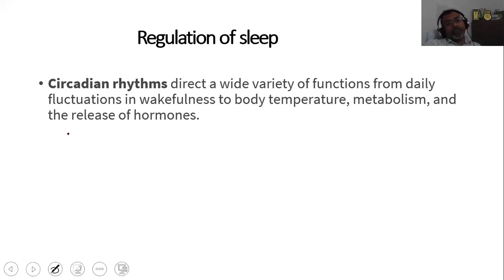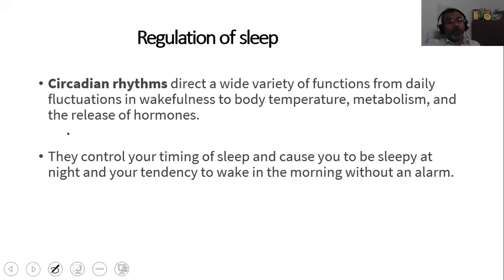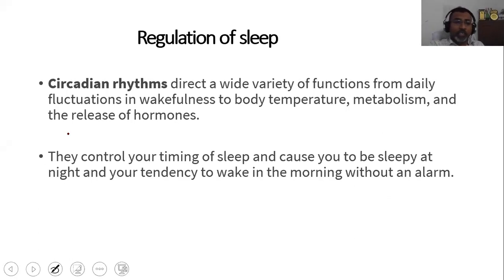Our body can control our timing of sleep and cause us to sleep at night at a particular time. That tendency to sleep basically depends upon a hypothetical clock. In the morning, even without an alarm, we also have a tendency to wake up — this is called the circadian rhythm. We will read more details about how the circadian rhythm is regulated just after the regulation of sleep topic.